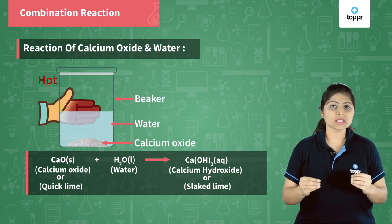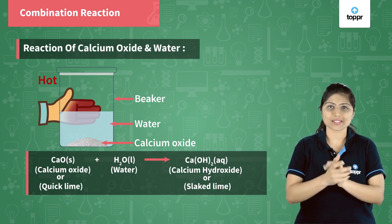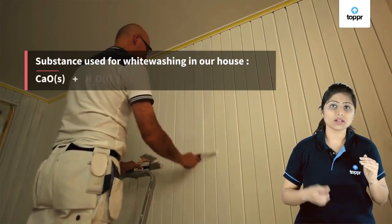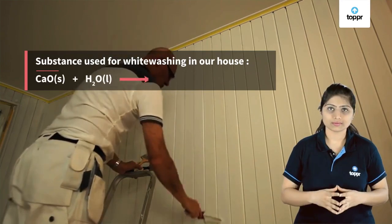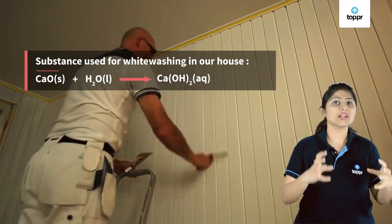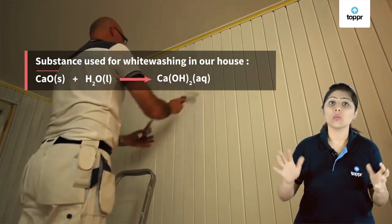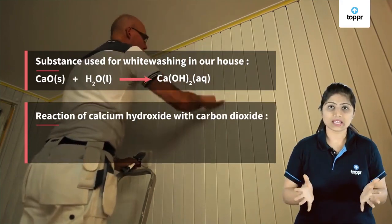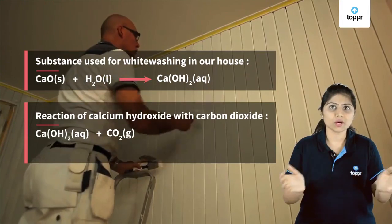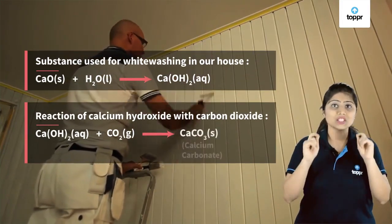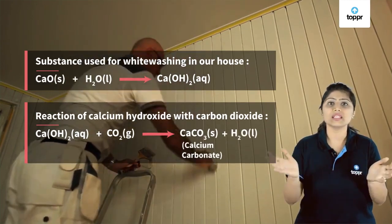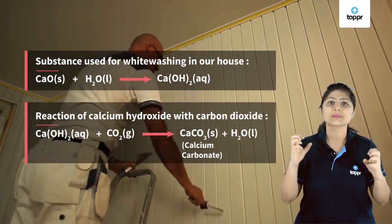This reaction is used in whitewashing of houses before painting. In huge amounts of water, calcium oxide is dissolved, forming calcium hydroxide. This solution is applied on the walls. After about two days, the calcium hydroxide reacts with carbon dioxide in the atmosphere to form calcium carbonate and water. Calcium carbonate has a shiny appearance, which makes the wall appear smooth.